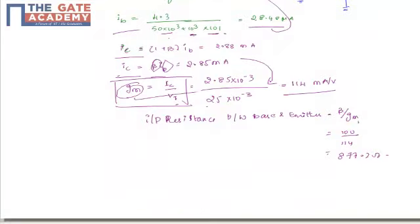So we know the value of gm. Directly by substituting gm value and beta value, we will obtain the input resistance between the emitter and the base, that is 877 ohms.